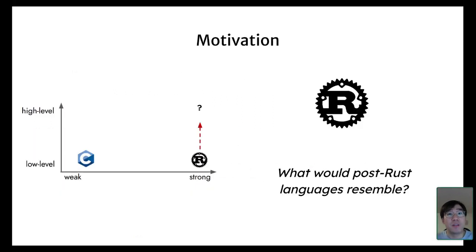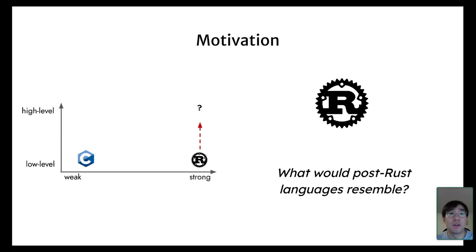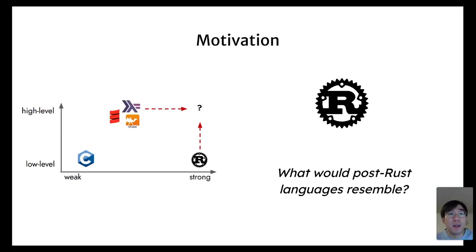But Rust is clearly not the end of history—what would post-Rust languages look like? Since Rust is a low-level language, perhaps we can expect some new language that will preserve the good things from Rust but also provide higher-level abstractions. On the other hand, existing high-level languages can also add new features similar to Rust.